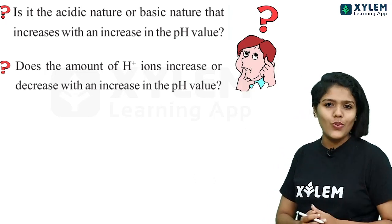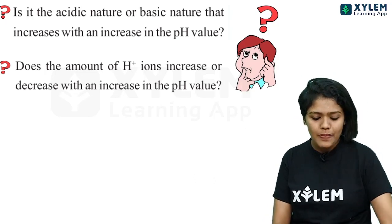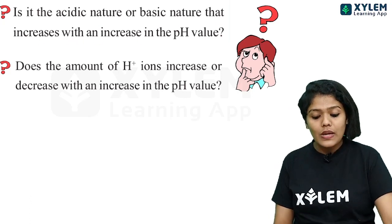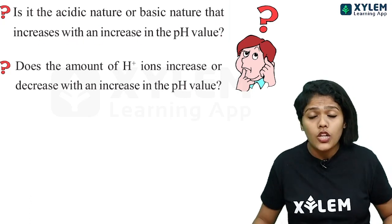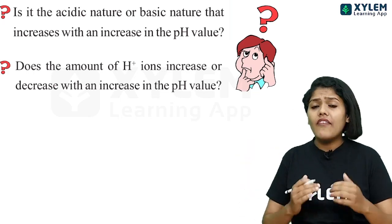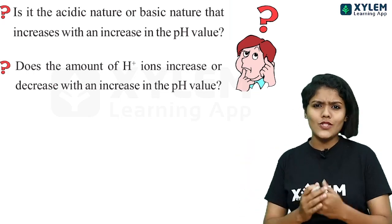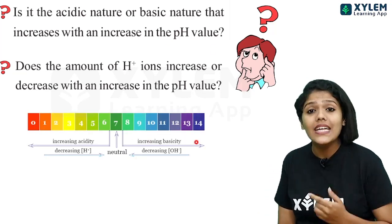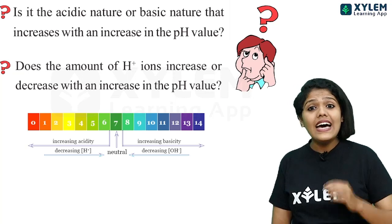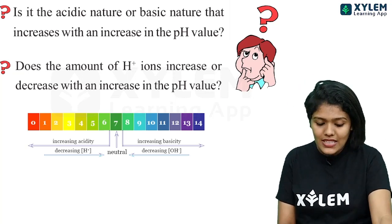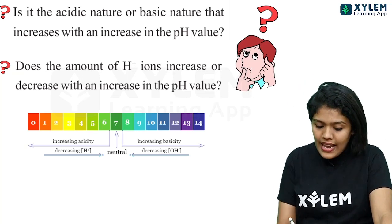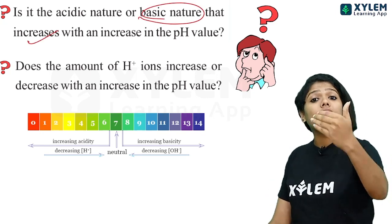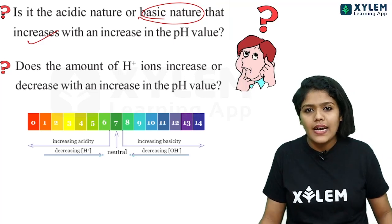Now let's answer two small questions. The first question: which nature — acidic or basic — increases with an increase in pH value? When the pH value increases, the basic nature increases. So the answer is: basic nature increases with an increase in pH value.